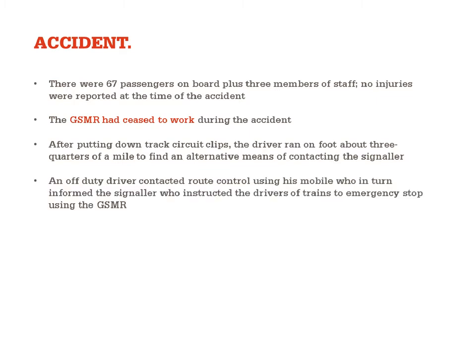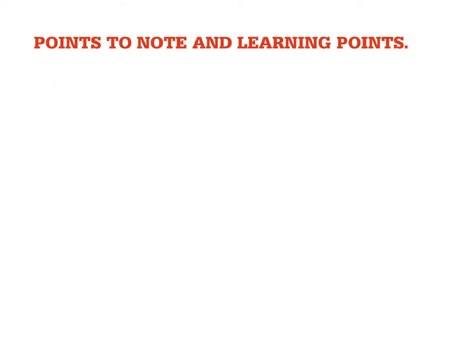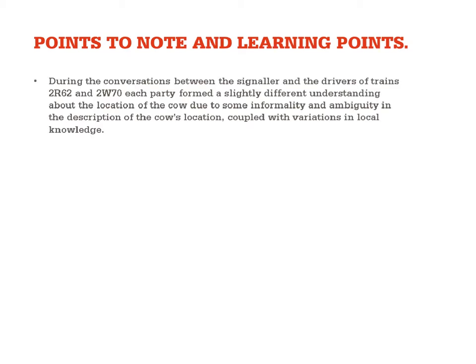An off-duty driver contacted route control using his mobile, who in turn informed the signaller, who instructed the drivers of trains in the area to emergency stop using GSMR. GSMR has a function where if the signaller is aware of an incident in an area, he can contact all drivers in that area to tell them to stop in order to prevent any escalation of the incident.